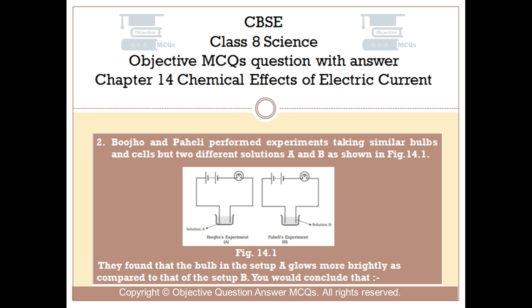Question number 2. Buiho and Pahali performed experiments taking similar bulbs and cells but two different solutions A and B as shown in figure 14.1. They found that the bulb in setup A glows more brightly as compared to that of setup B. You would conclude that: